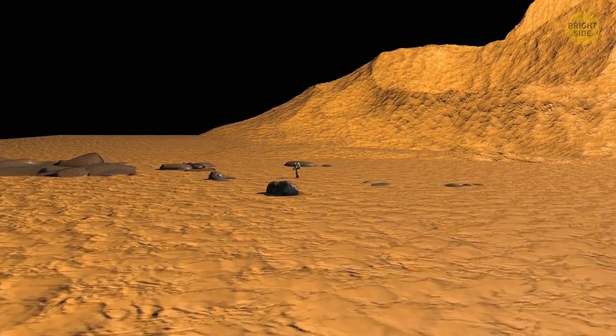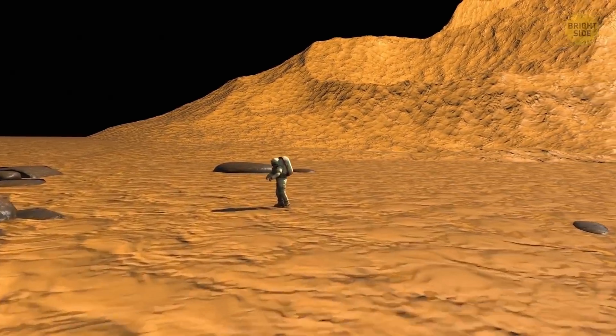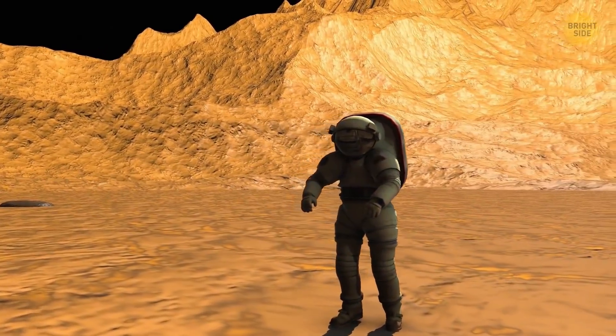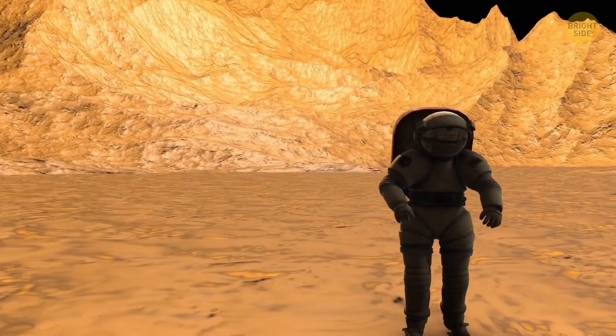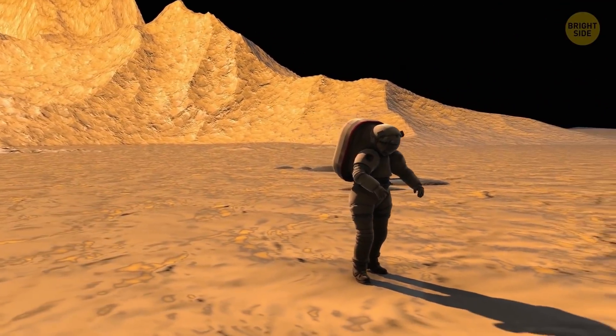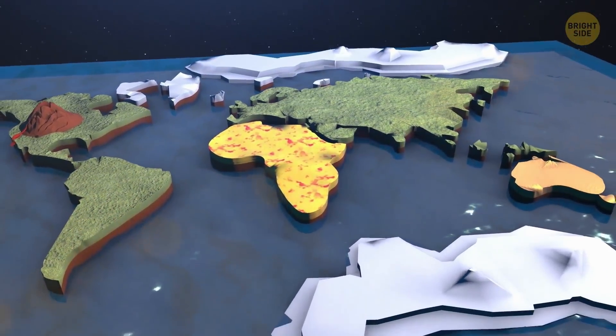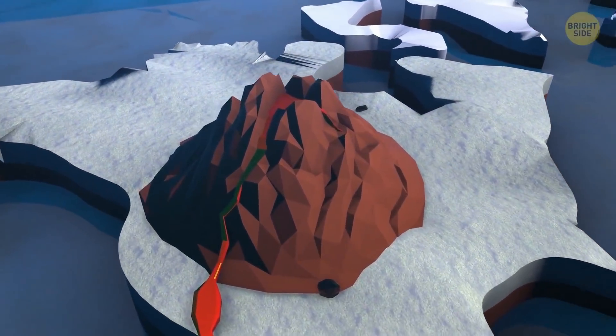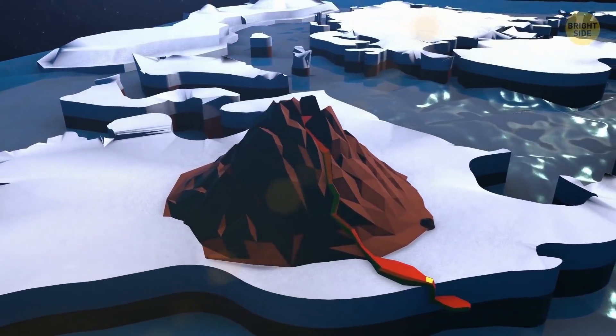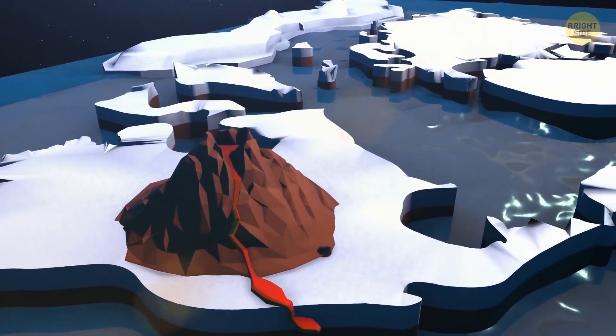First, you wouldn't be able to breathe without an oxygen mask and a pressure suit. Rocks, gas, water, and everything else wouldn't be heated by the boiling core anymore. The Earth would grow colder and colder. There would be no earthquakes, volcanoes would stop spewing lava, and the continents wouldn't be drifting apart bit by bit as they do now.